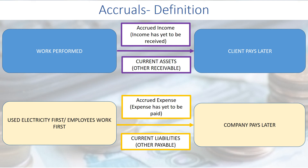Now let's look at accrued expense. As a business, we use a lot of services — we use electricity, we use insurance, and we get our workers or employees to work for us first. When we use electricity or when our employees work for us, we have not paid them yet. When we pay them later, the expense is considered expense has yet to be paid.